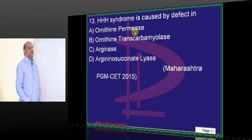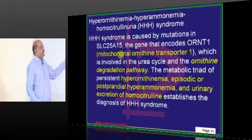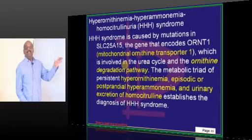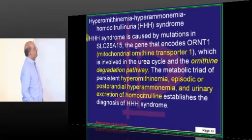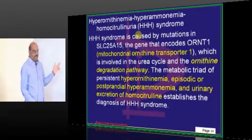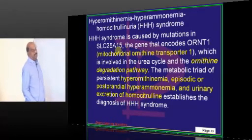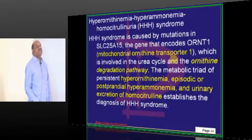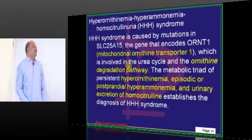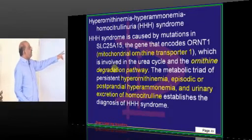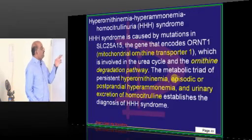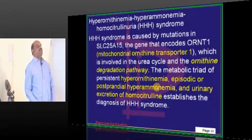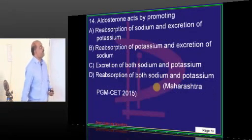HHH syndrome involves urea cycle enzyme defects, which is a high-yielding topic. Hyperornithinemia, Hyperammonemia, Hypercitrllinemia — this is called HHH syndrome. It occurs whenever there is a defect in the ornithine transporter located in the mitochondrial membrane, called mitochondrial ornithine transporter 1 (also called ornithine permease). This leads to hyperornithinemia, postprandial hyperammonemia, and urinary excretion of homocitrulline, which establishes the diagnosis.